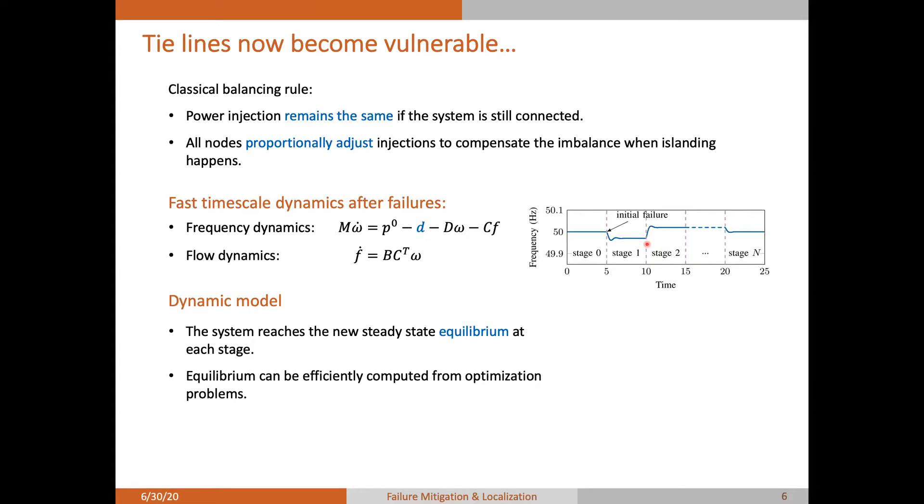For example, the post-conditioning equilibrium can be characterized by the following optimization problem when the droop control is adopted. And this equilibrium precisely recovers the above balancing rule. Therefore, we have the flexibility in the controller design and the corresponding balancing rule. So we may have a better failure mitigation approach with a better control method.